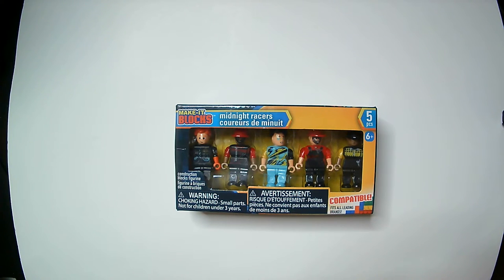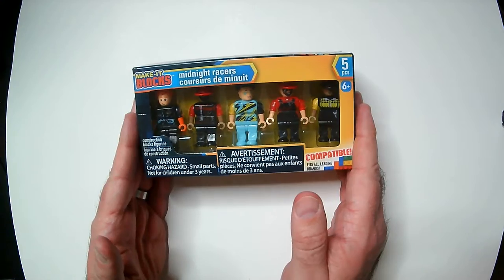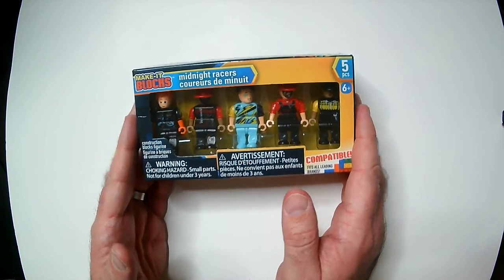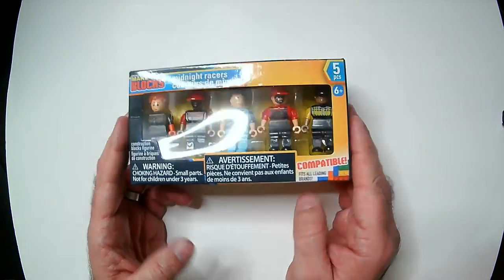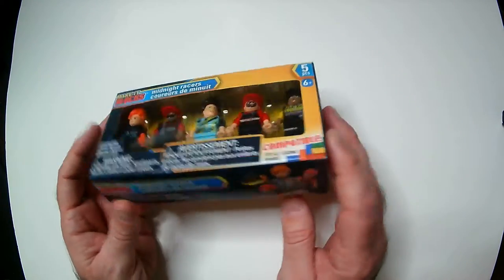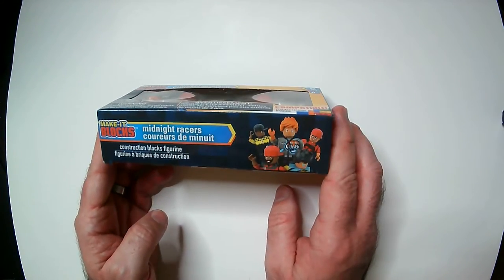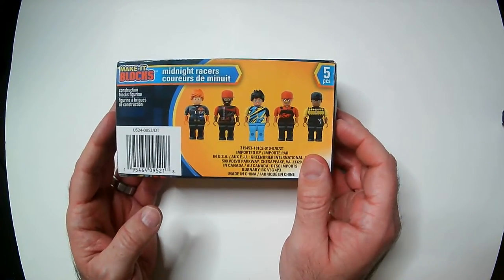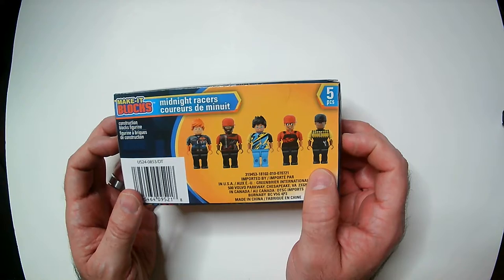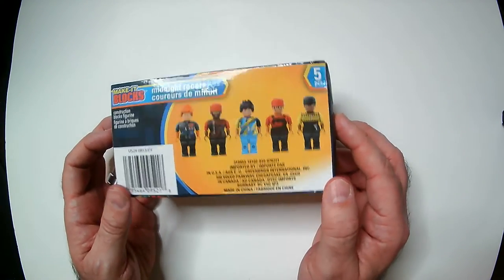Hey, welcome back to BLAHR. Today we have the Make It Blocks midnight racers figure set. I picked this up from Dollar Tree, dollar twenty-five tree. They have different sets like monsters, policemen, firemen, and some others. Maybe medical workers too, but different sets. This is the midnight racers, I guess kind of like the Fast and Furious series.